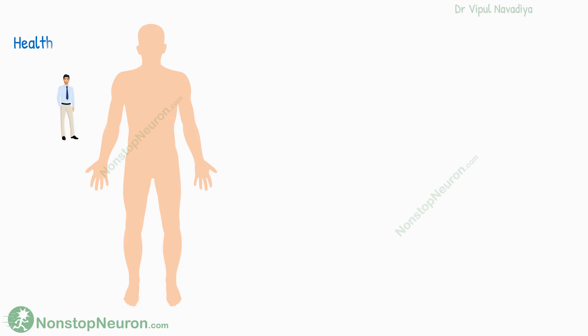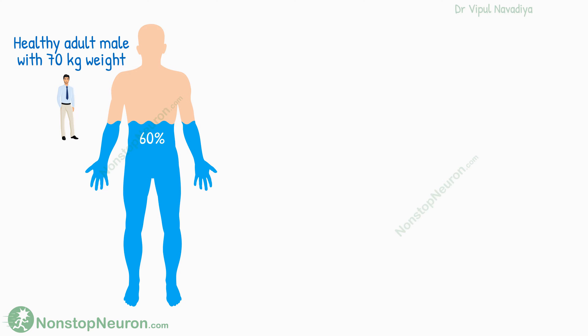In a normal adult male of 70 kilograms of weight, about 60% of body weight is water. That is, a 70 kg man has 42 liters of water in his body.